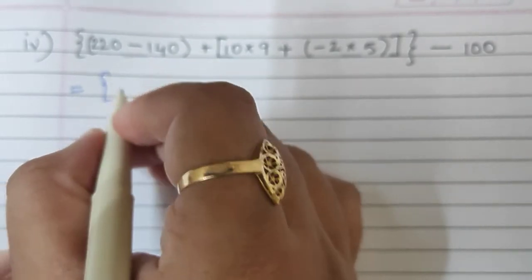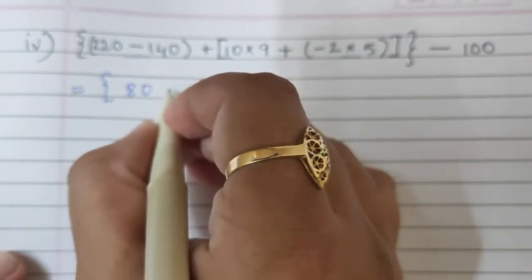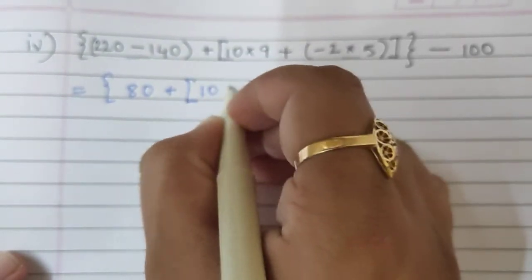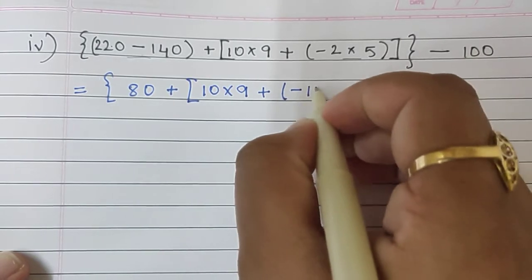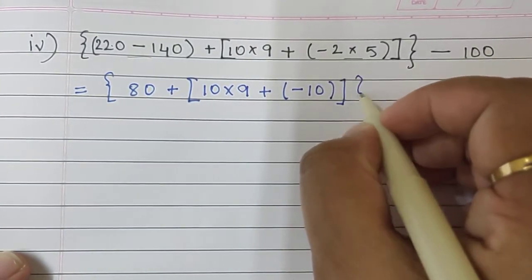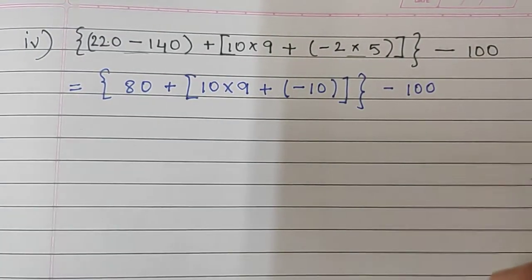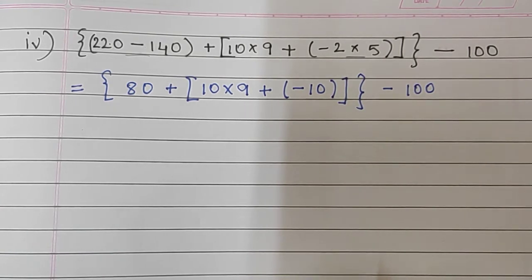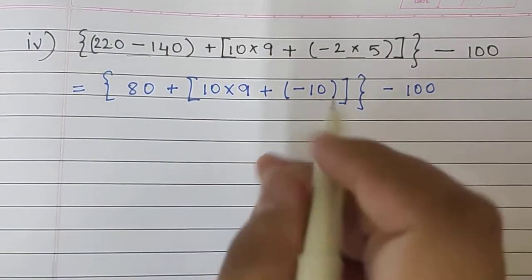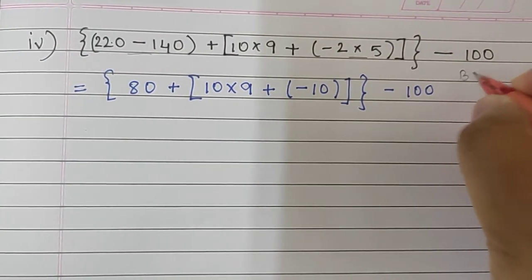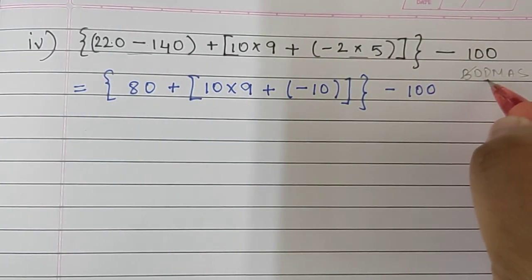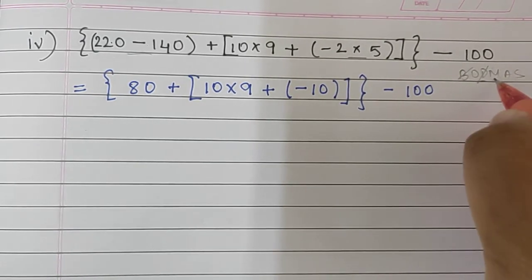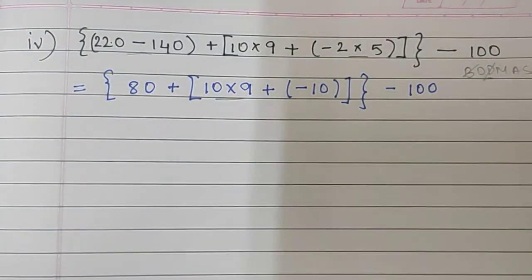220 minus 140 is 80, plus 10 into 9, plus... 5 twos are 10, so minus 10. According to the BODMAS rule, after Bracket Of there is Division — there is no division here, so we cancel Division. Next is Multiplication — there is multiplication here, so we will do that. 80 plus 90 plus...